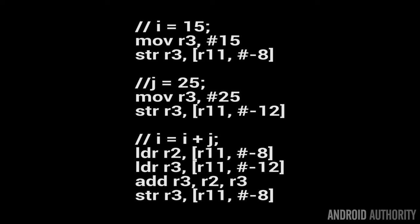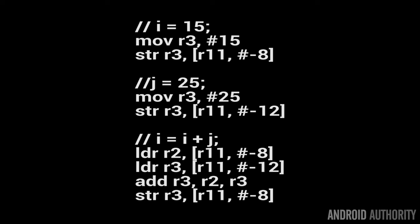Here's another snippet of assembly language so you can get an idea of what it looks like. This one takes the number 15 and puts it into register three, then stores it somewhere on the stack — specifically eight bytes down the stack. It then takes the number 25 and puts it into R3, storing that at the twelfth position on the stack. Finally, it adds those two numbers together and stores the result in R3.